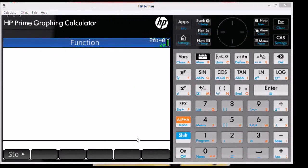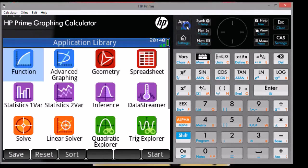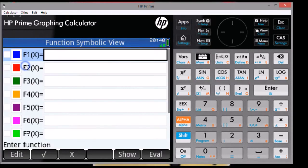The first thing you want to do is to have your calculator set up in the function app and in radian mode. To change apps, press the apps button and select a function. You will be taken straight to the function symbolic view screen.